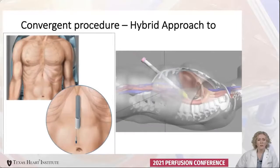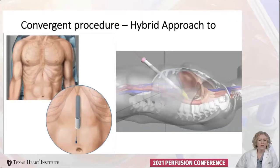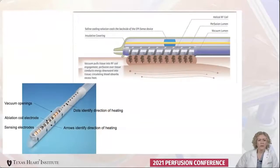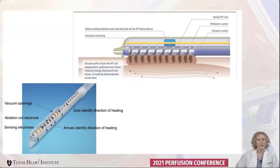For the surgical part, we make a small sub-xiphoid pericardial window at the inferior portion of the sternum, then put a large trocar into that incision into the pericardium behind the heart. The ablation probe is called the Episense coagulation device, made by Atricure. It's three centimeters long with a coil that provides radiofrequency ablation energy. The energy is directed directly towards the heart and away from the esophagus, which makes this much safer.